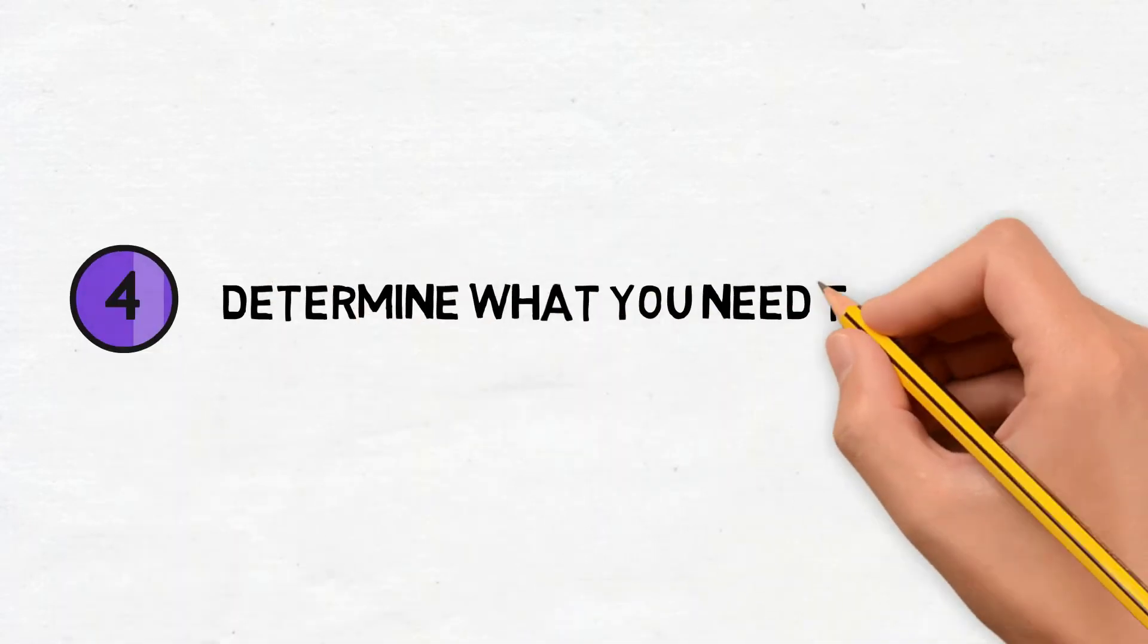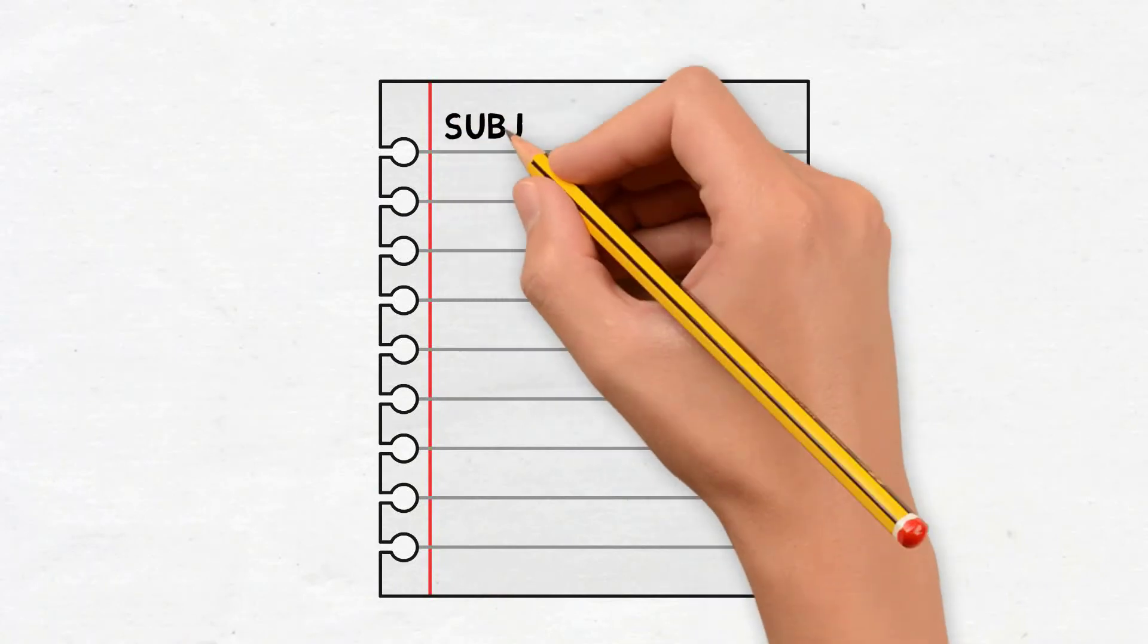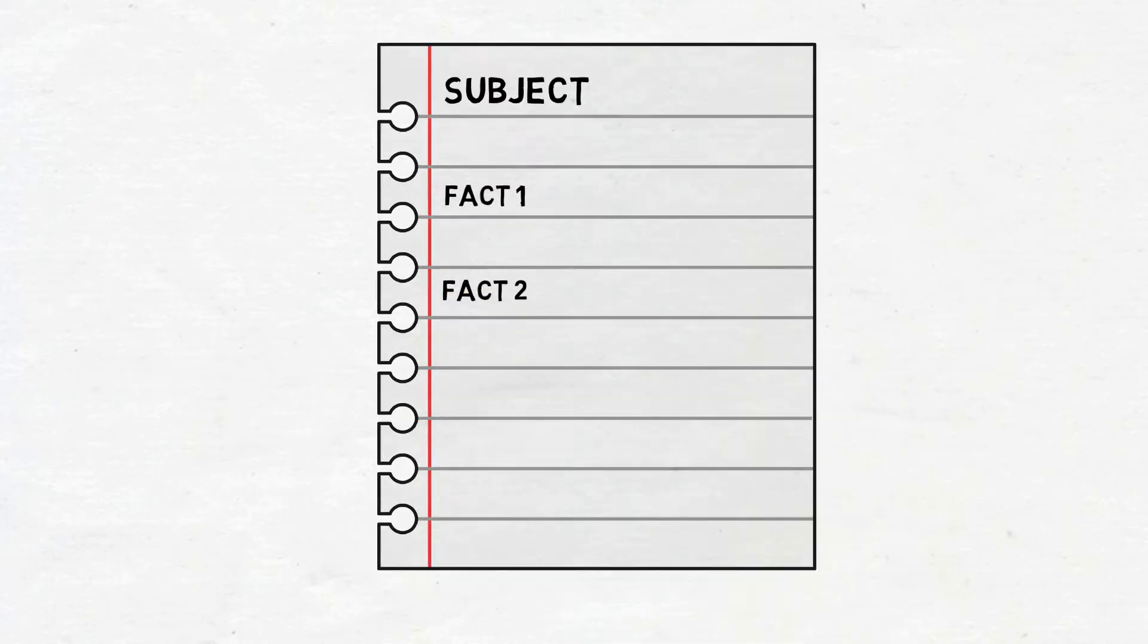Number 4: Determine what you need to find out. What areas are you still unfamiliar with? Create a list so your research is focused. This will also break the process down into smaller steps so that it's less time consuming.